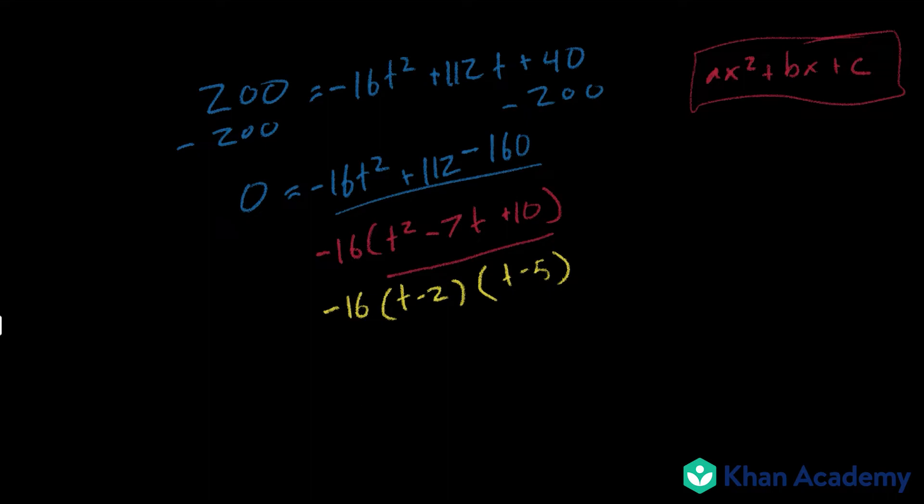So now from here we would have to see which ones we can make equal 0. So negative 16 we cannot because negative 16 is negative 16, we can't change anything about that, but we can use t minus 2 and t minus 5.